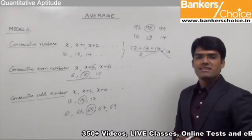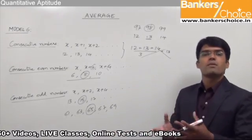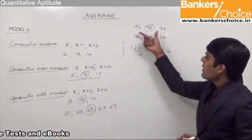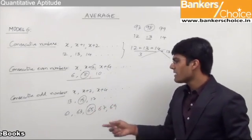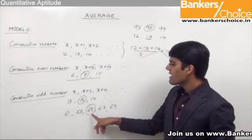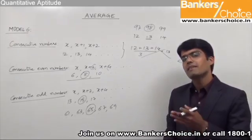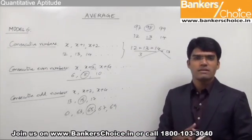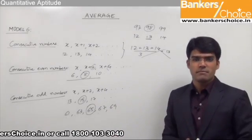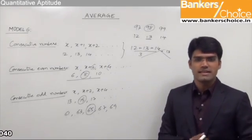Now the second point we need to understand is how to find out the average of an even number of consecutive numbers. In all the cases discussed so far we had an odd number of numbers — three numbers, three numbers, five numbers and so on. Whenever there are an odd number of numbers we have a definite middle number and it is easy to find out the average. But in case we have an even number of consecutive numbers there is not one middle number, so how do we find the average?